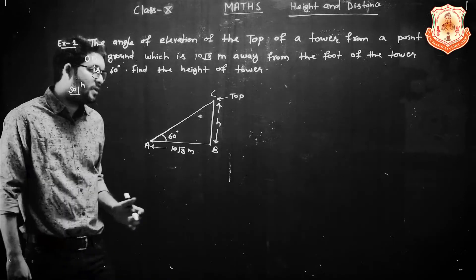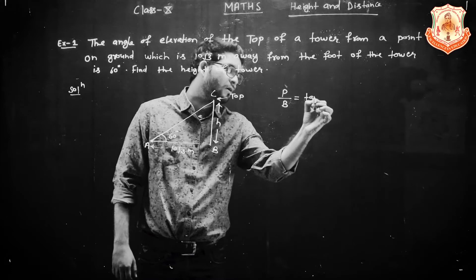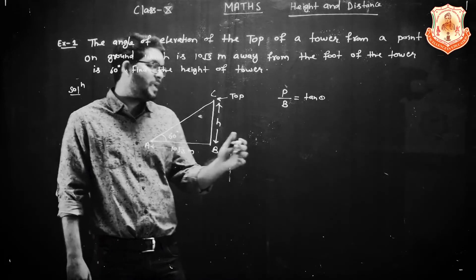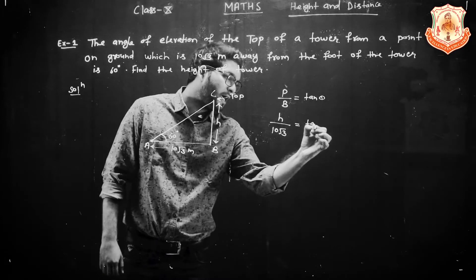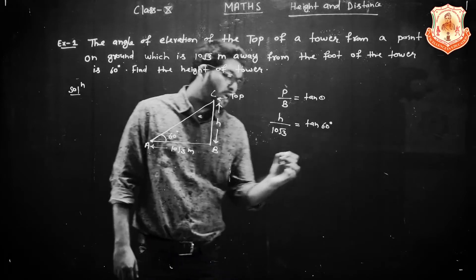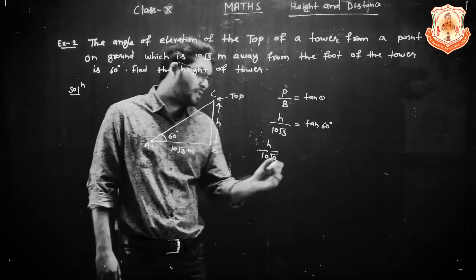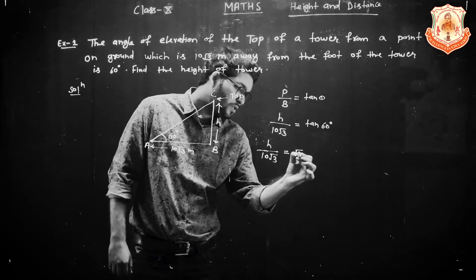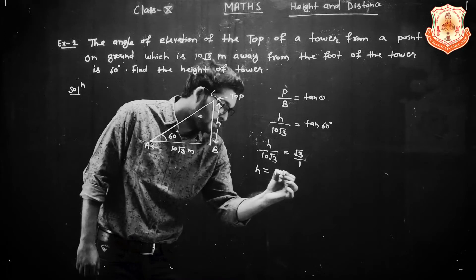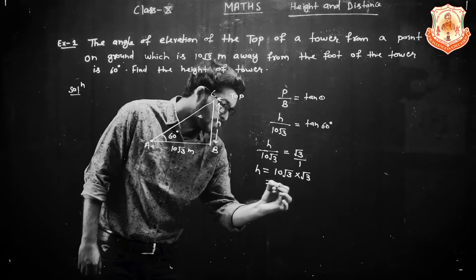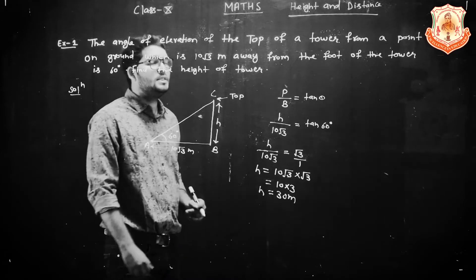We know that perpendicular upon base equals tan theta. Here perpendicular is H and base is 10 root 3, equal to tan 60 degrees. The value of tan 60 degrees is root 3. After cross multiplication, H equals 10 root 3 into root 3, which is 10 into 3, equal to 30 meters. This is Example number 1.